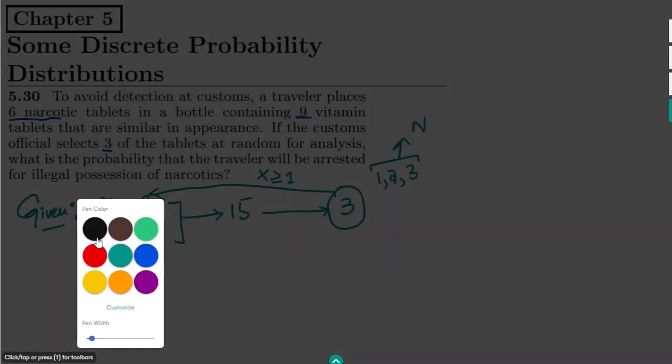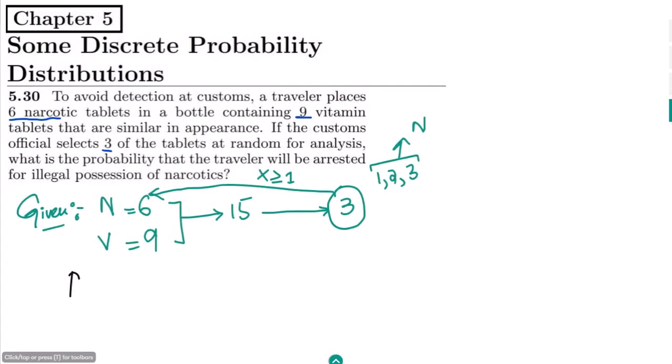We want to find out the probability that the number of tablets selected would be greater than or equal to 1, and this is also 1 minus the probability that...